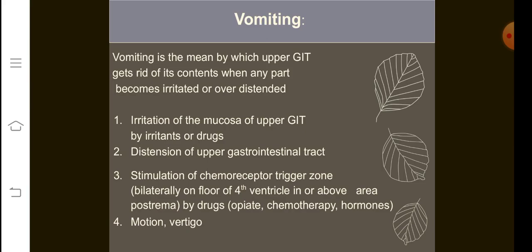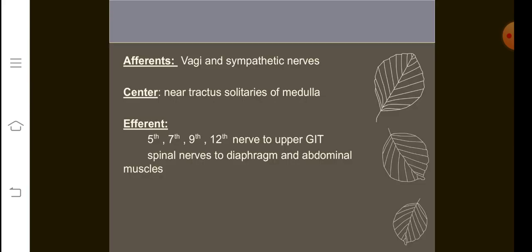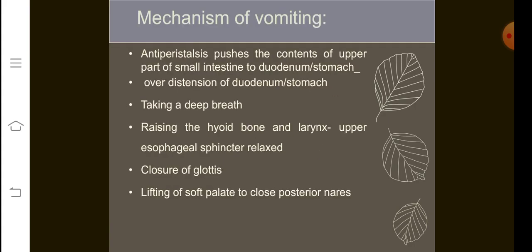Motion and vertigo can also cause vomiting — some people have motion sickness and feel like vomiting when traveling through hilly areas. The efferent nerves which carry the signals are the vagus nerve and sympathetic nerves. The main center for vomiting is the nucleus tractus solitarius, present in the medulla oblongata. The efferent nerves carrying the signal back are the fifth, seventh, ninth, and twelfth cranial nerves, and they carry signals to the upper GIT, diaphragm, and abdominal muscles, which contract.